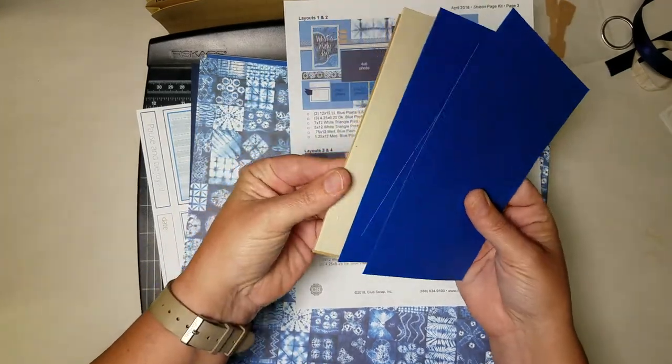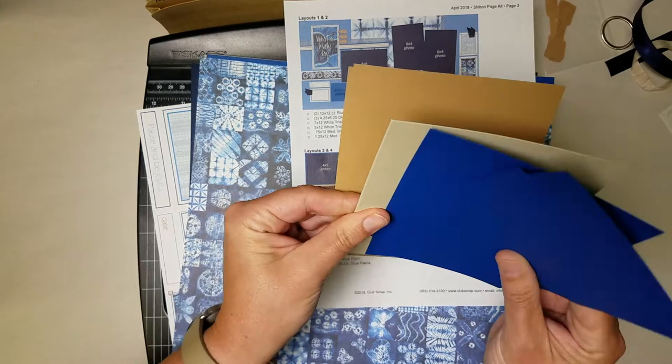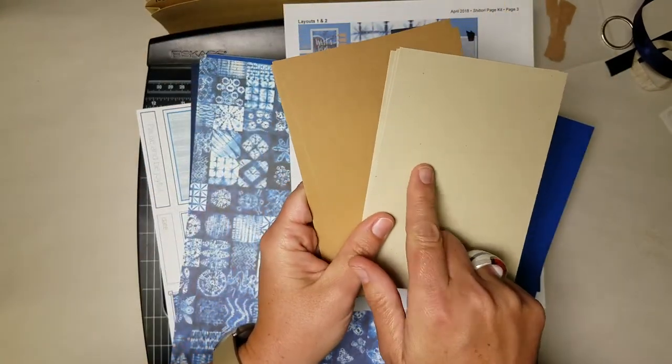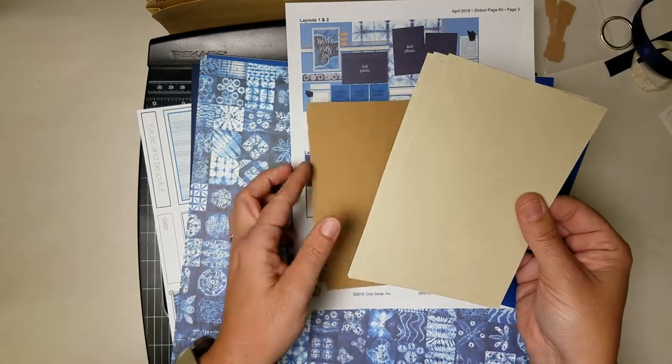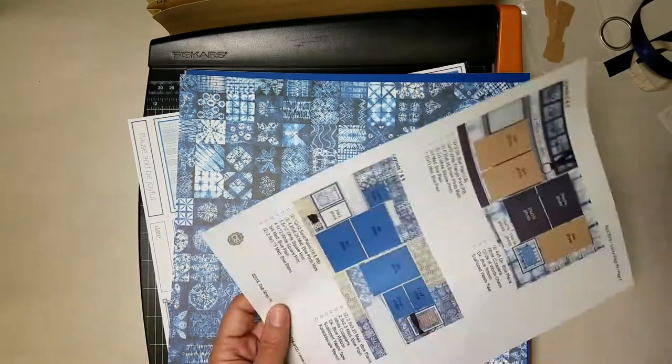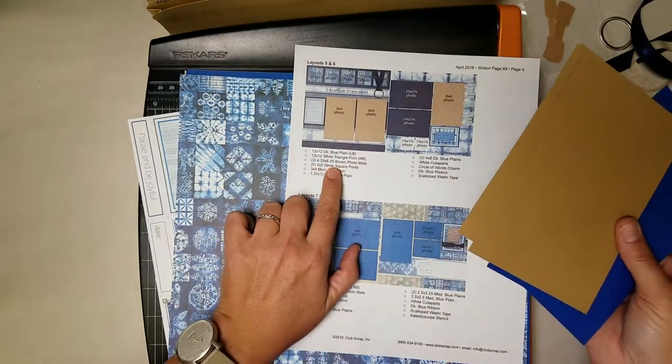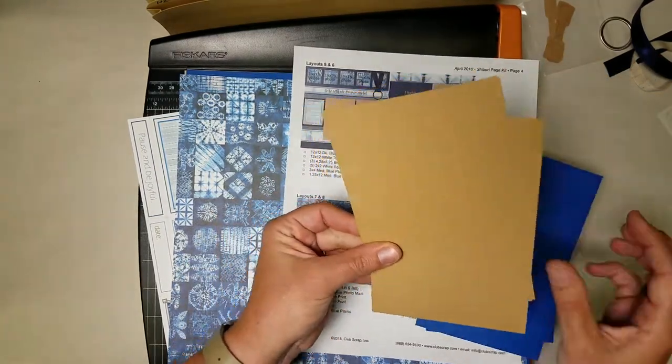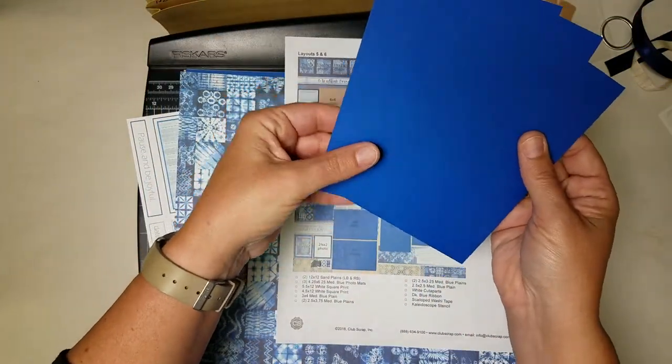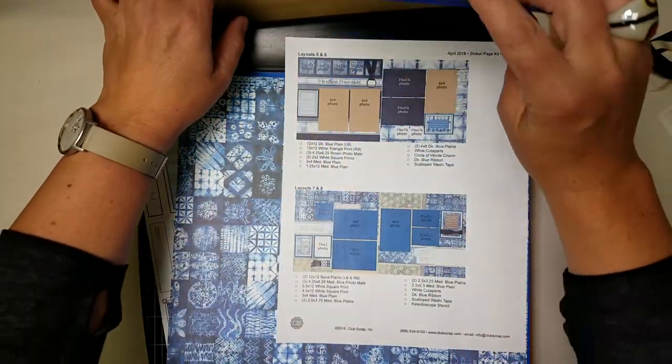Alright then we have three sand colored photo mats. Now if you look carefully there is a darker shade and a lighter shade so the sand is the lighter shade. All three of these go in the pocket for layouts three and four. Looks like we use three brown photo mats in five and six and three medium blue photo mats in seven and eight.